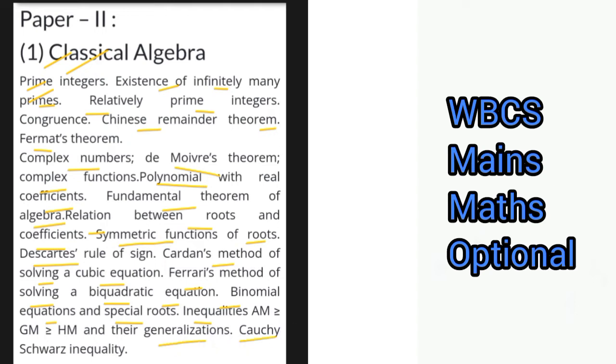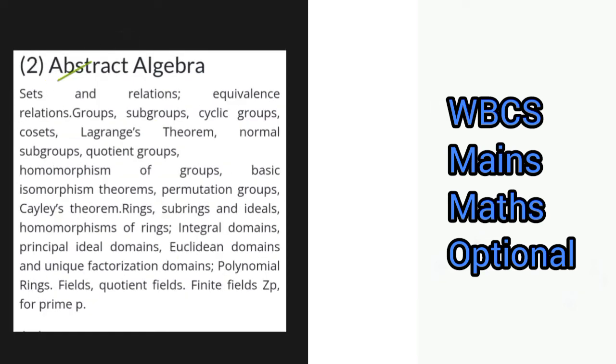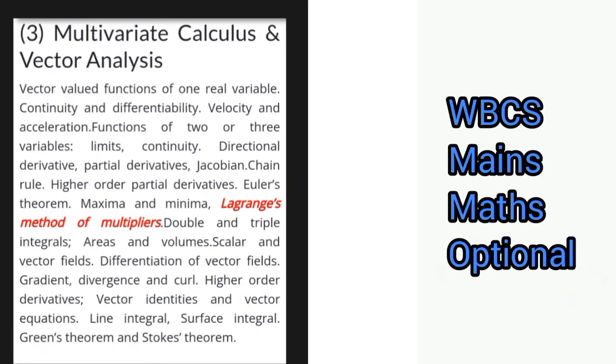The next point is Abstract Algebra covering sets and relations, equivalence relations, groups, subgroups, cyclic groups, cosets, homomorphism, quotients, basic isomorphism theorems, permutation groups, Cayley's theorem, rings, subrings and ideals, homomorphisms of rings, integral domains, principal ideal domains, Euclidean domains and unique factorization domains, polynomial rings, fields, quotient fields, and finite fields of order prime p.